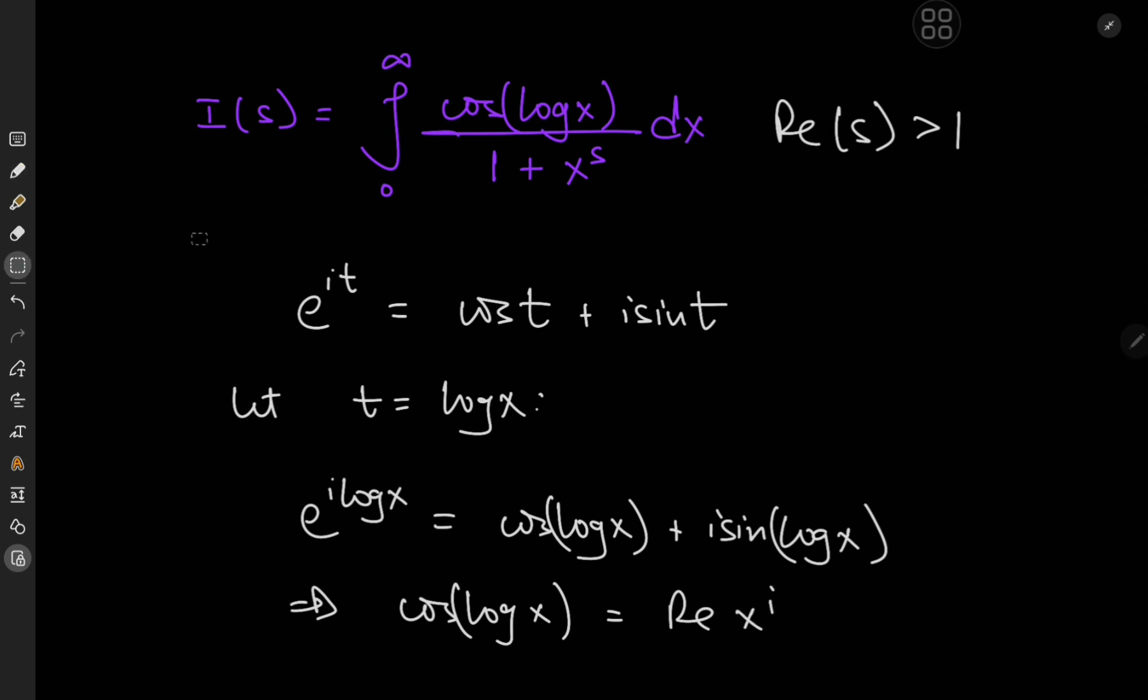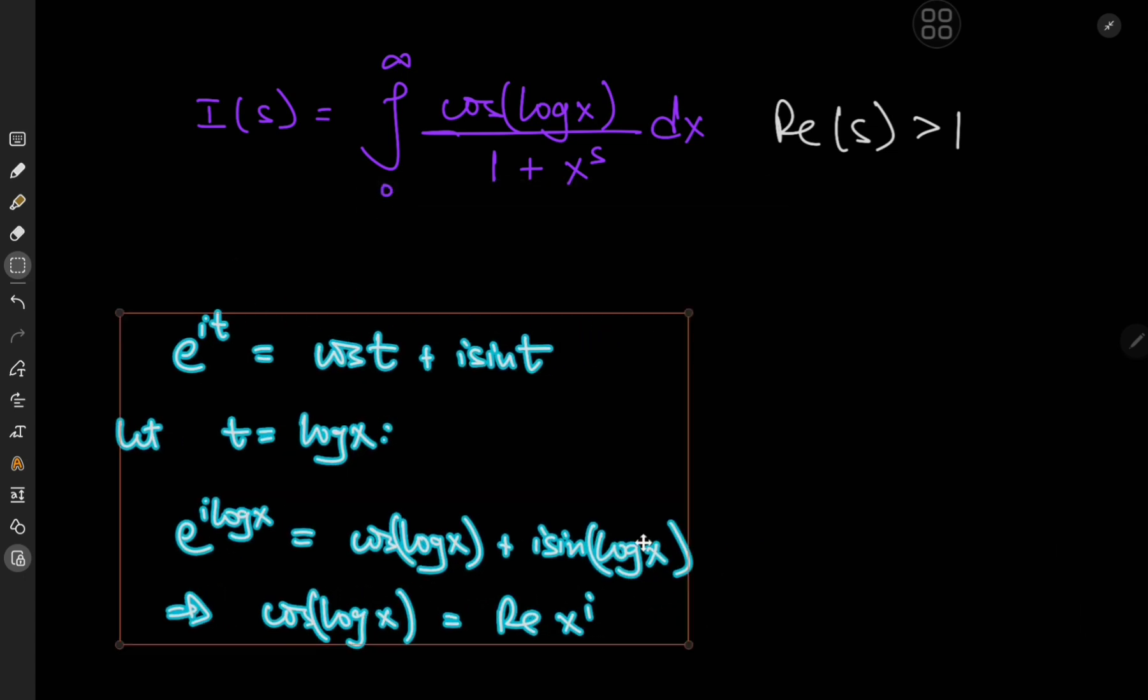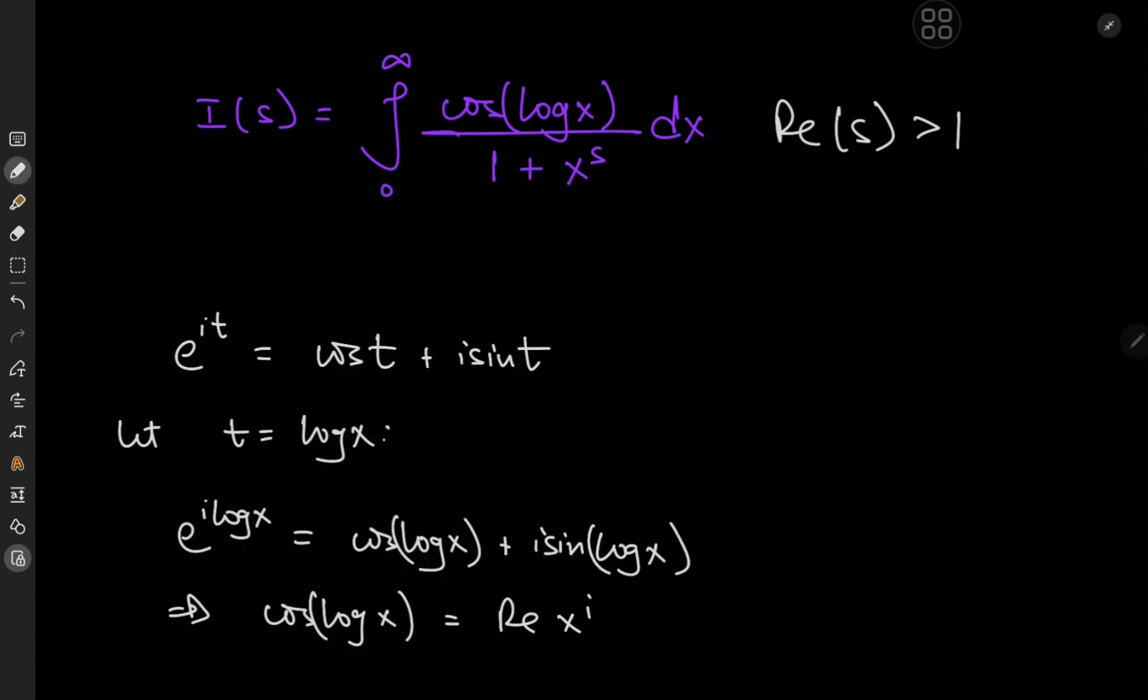So this implies that the cosine of log x equals the real part of x to the i, meaning that our integral here can be written as the real part of the integral from zero to infinity of x to the i divided by one plus x to the s dx.